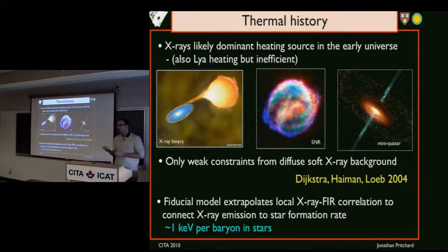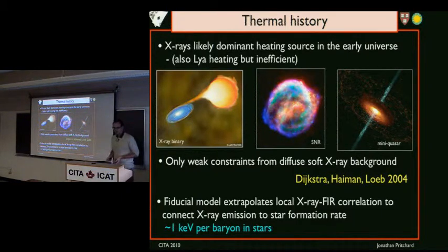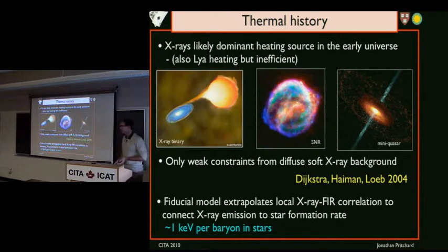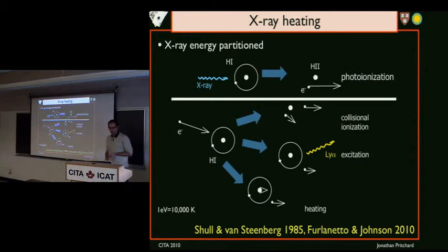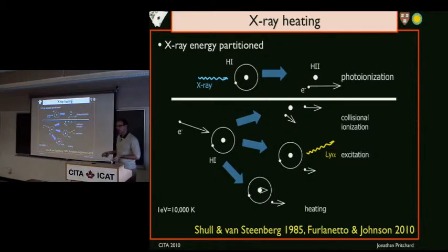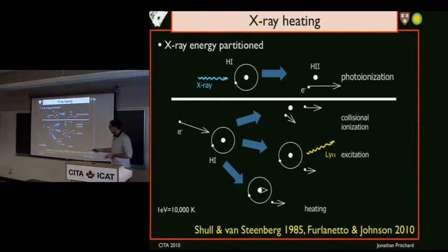Why are X-rays dominant rather than just photo-ionizing photons? Early on, the photons energetic enough to photo-ionize hydrogen are constrained to relatively small bubbles around the first sources — they don't propagate long distances. X-rays have long mean free paths, so they heat regions tens of megaparsecs away from the source. Because we don't know the properties of these first sources, we extrapolate by assuming galaxies at high redshift look like local galaxies, giving about one keV per baryon converted into stars. The mechanism for X-ray heating is that the energetic X-ray photo-ionizes hydrogen, producing an energetic electron that partitions its energy between further ionizations and heating.